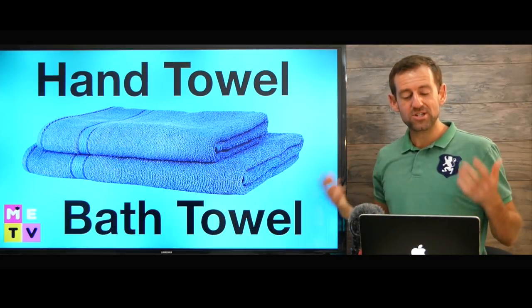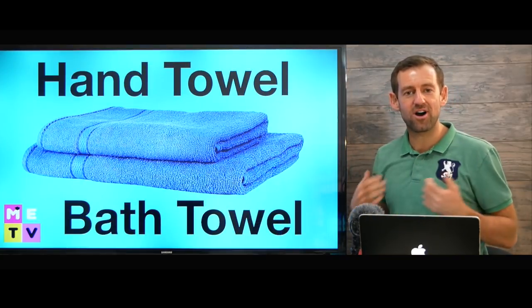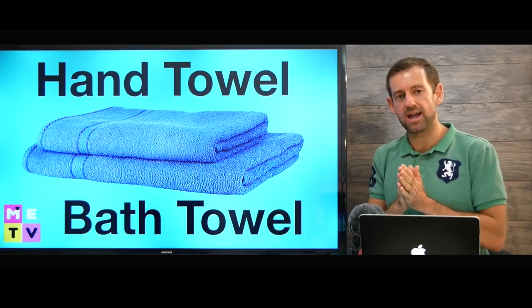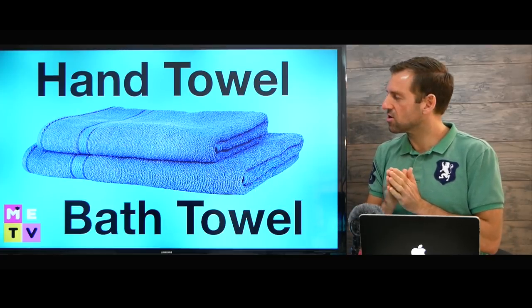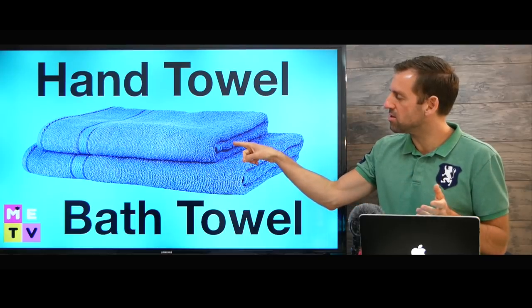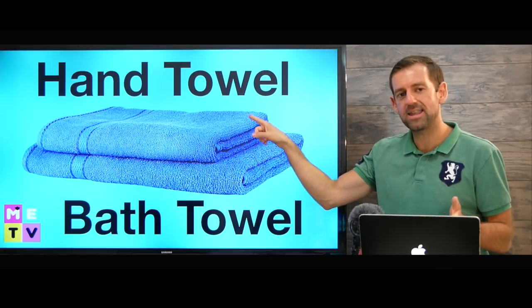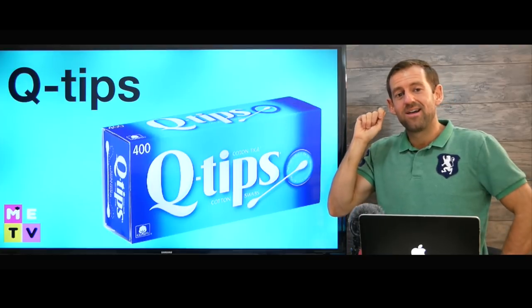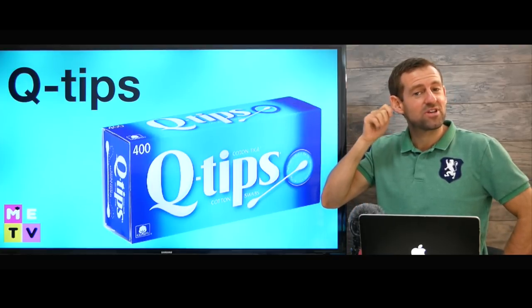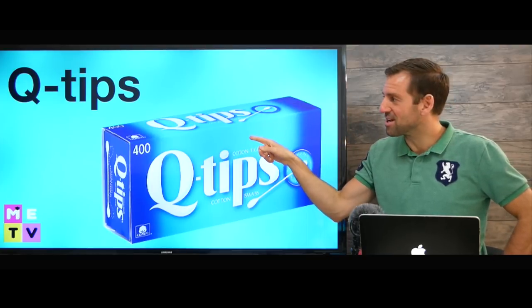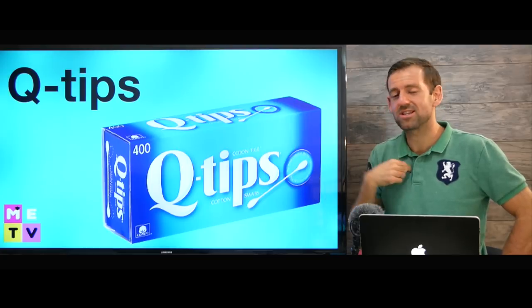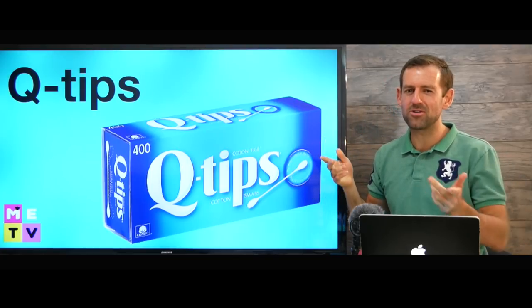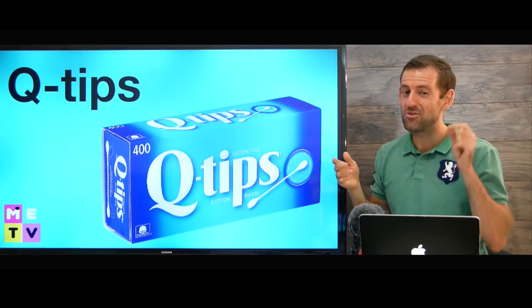Now when you're finished taking a bath, you're going to dry yourself off using a bath towel. And when you've finished washing your hands, you're going to dry your hands off using a smaller towel called a hand towel. Now these things that you use to clean your ears are called Q-tips. I always Q-tip my ears after I shower — what about you? Do you use Q-tips?